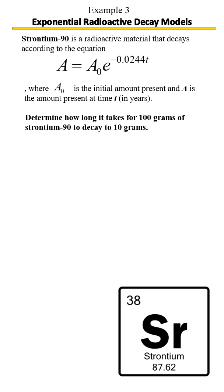Determine how long it will take for 100 grams of Strontium-90 to decay to 10 grams. As we can see in the formula, a is the future amount after a certain number of years, so that would be 10 — because we want to know when it goes from 100 to 10. A-sub-zero is the initial amount, which would be 100.